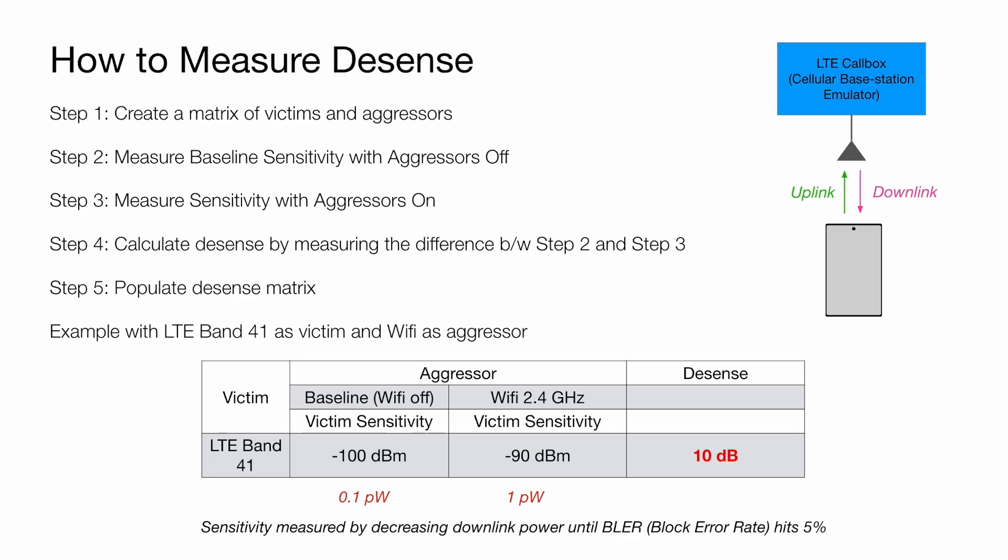Once we've measured sensitivity with the aggressor off, the next step is to measure it with the aggressor on — meaning you turn on Wi-Fi on the smartphone and then measure the sensitivity on LTE band 41. The difference between the two measurements gives you the desense. In the example shown, the baseline sensitivity for LTE band 41 is about −100 dBm (roughly 0.1 picowatts). When Wi-Fi is turned on, you're only able to measure LTE band 41 as low as −90 dBm, giving a desense of 10 dB.